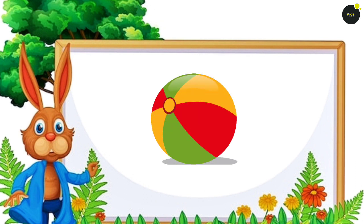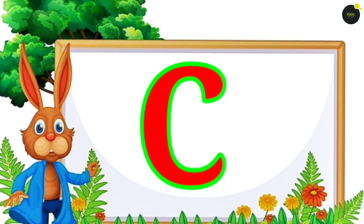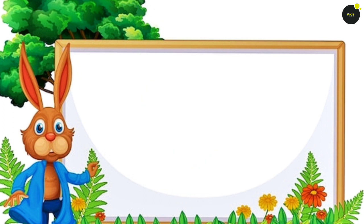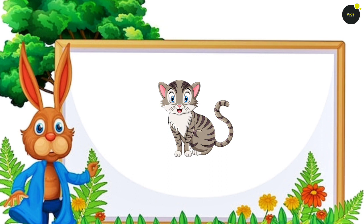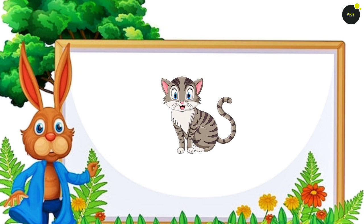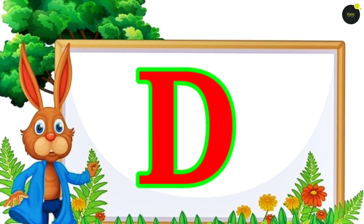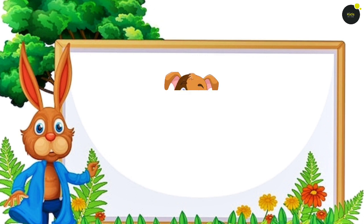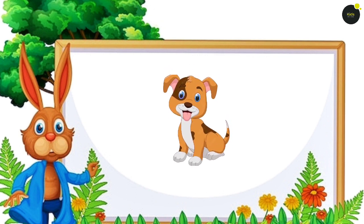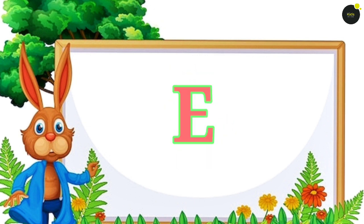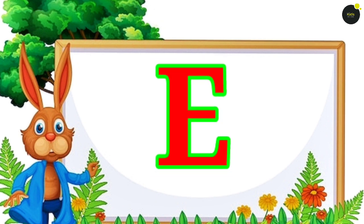B for Ball. Ball means Lame. C for Cat. Cat means D for Dog. Dog means.